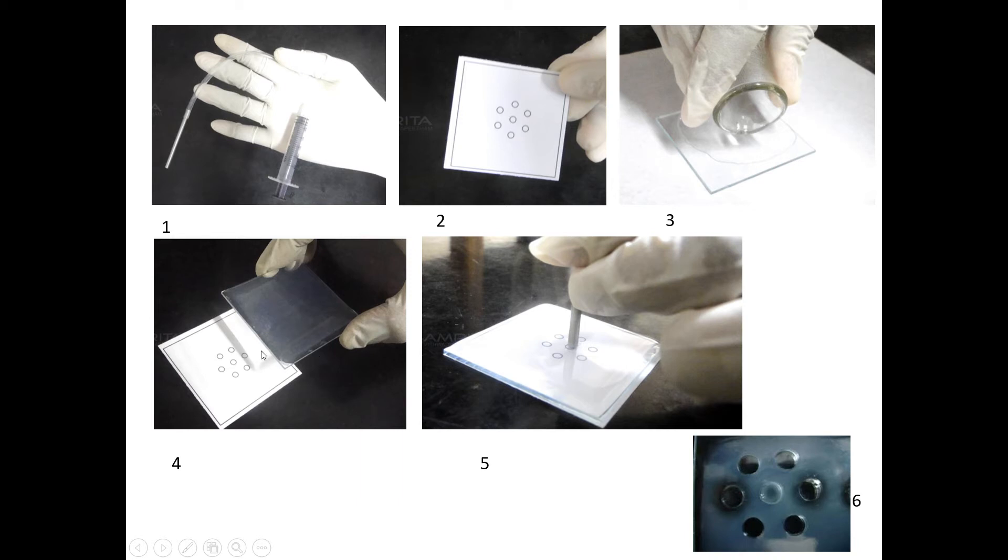Place it below the slide and punch the wells in the gel with the help of a gel puncher, as shown in the third diagram, corresponding to the markings on the template.